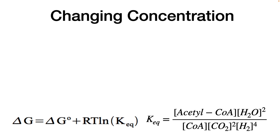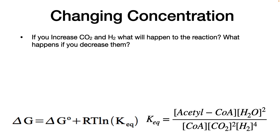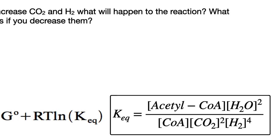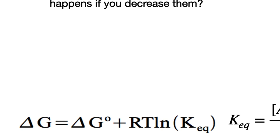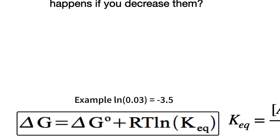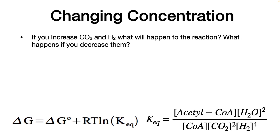What happens if you increase the concentration of coenzyme A, carbon monoxide, or hydrogen? K-equilibrium becomes smaller because these three compounds are in the denominator. Then, looking at the calculation for delta G, the natural log of K-equilibrium — if it gets below one — is going to be negative, which makes delta G more negative. Remember, a more negative delta G is more favorable. Therefore, delta G will go more negative and may even become favorable, depending on delta G-naught.